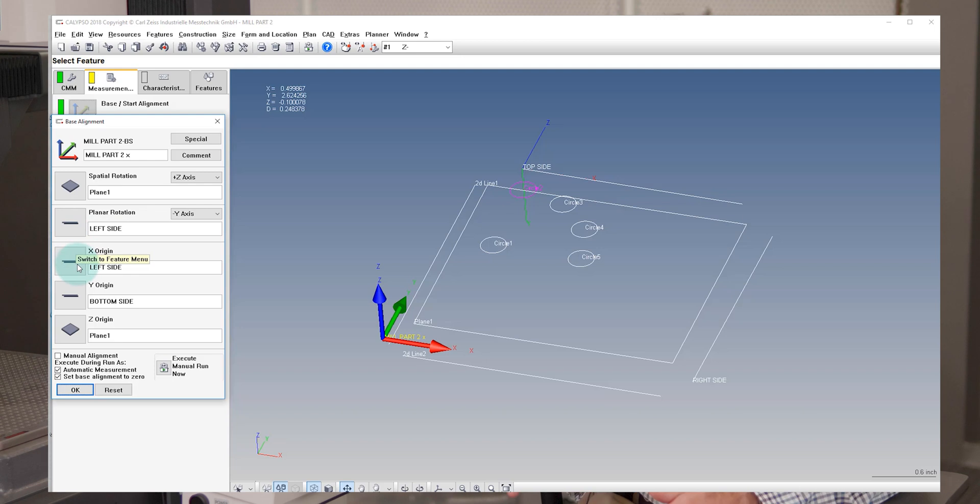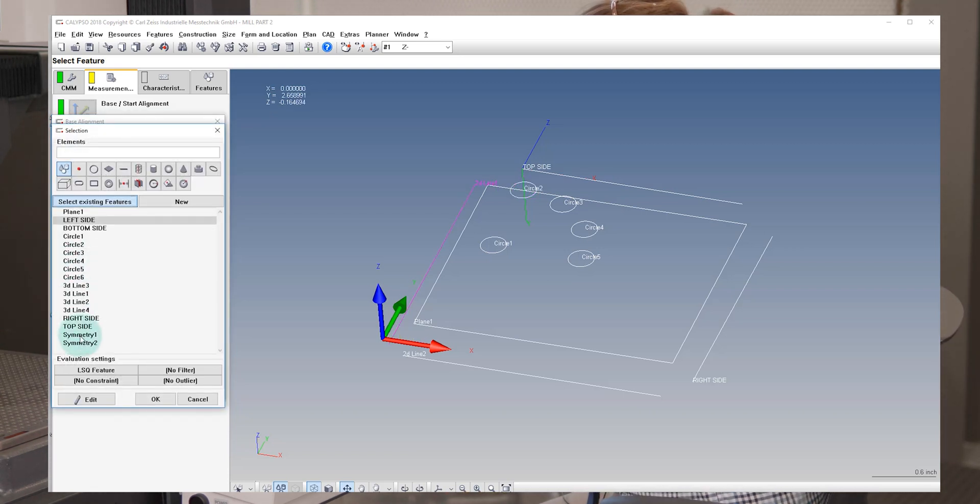Our X origin, remember X is going to be left and right. We want it to be the center line that uses the right and the left side. That's what we need for our X axis control. So I'll go in here, change this to symmetry one and hit OK.